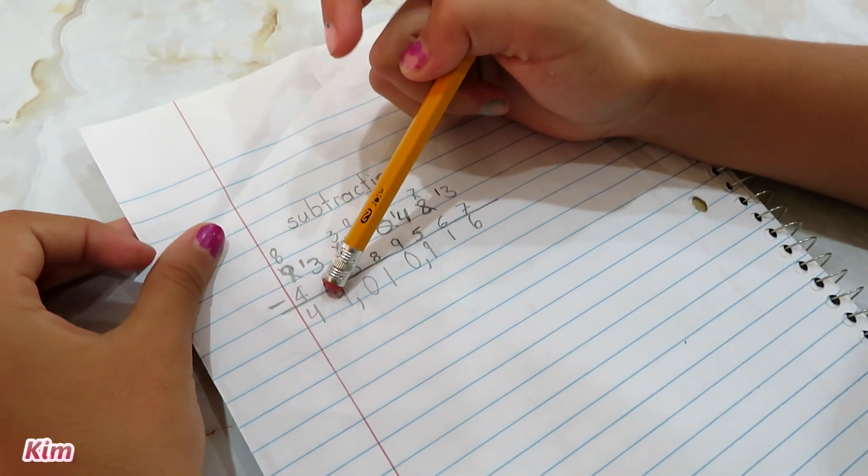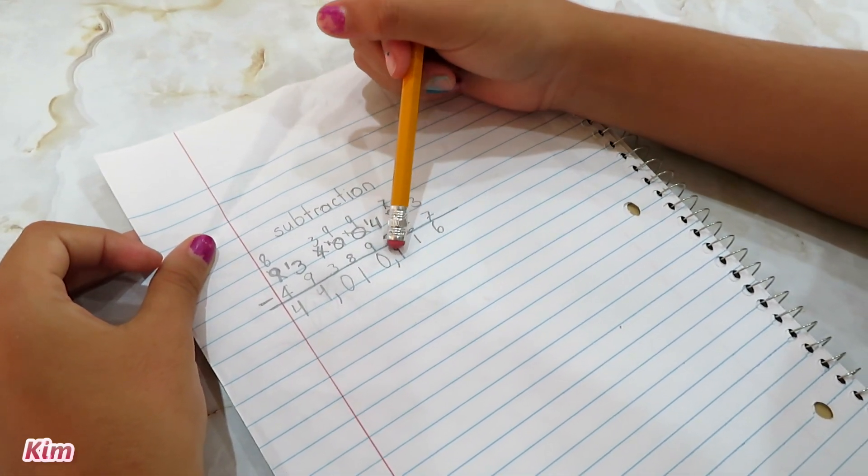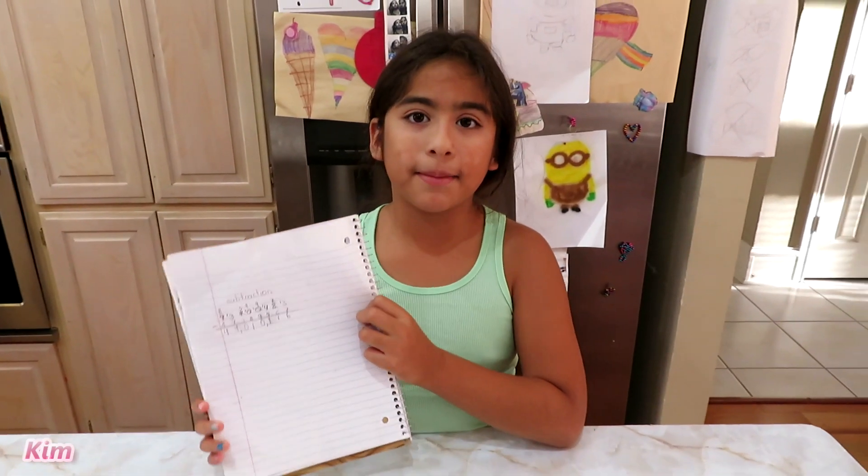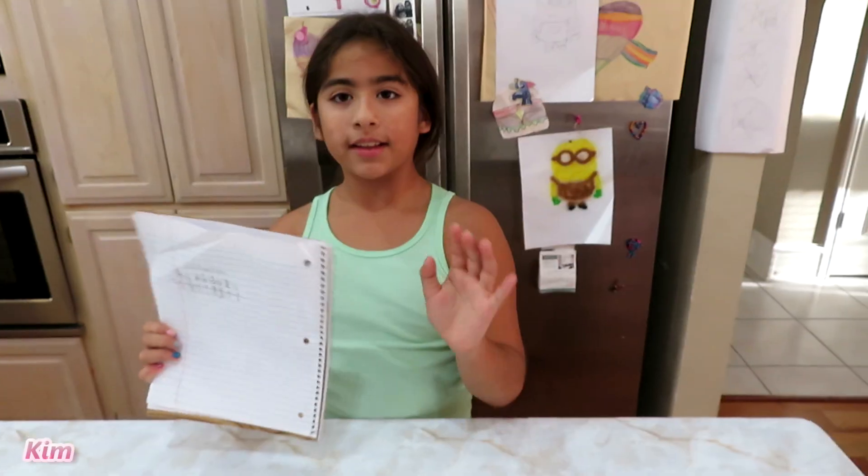So we have 44,010,916. That's how you subtract big numbers. Wow. Nice. Bye.